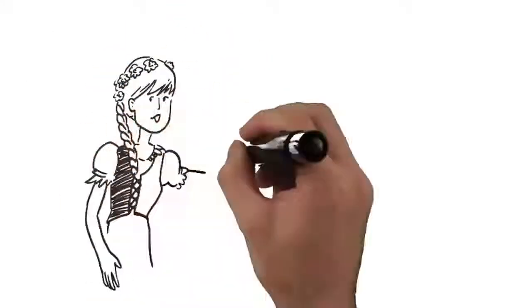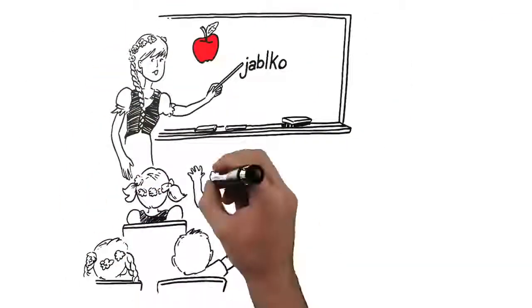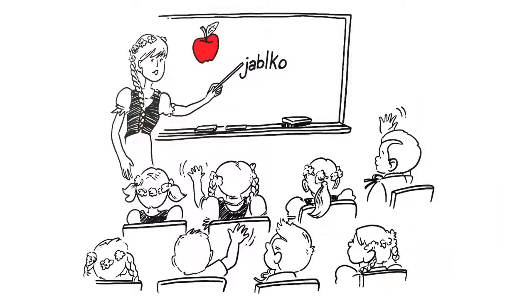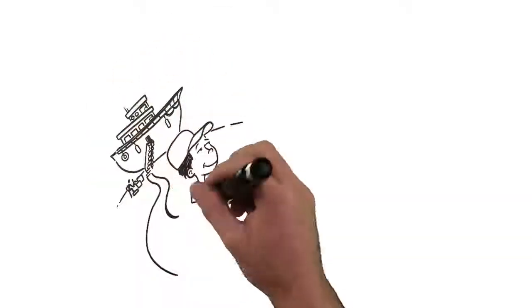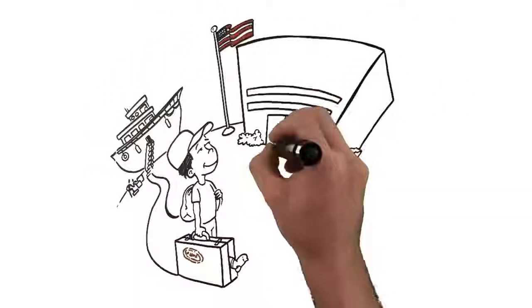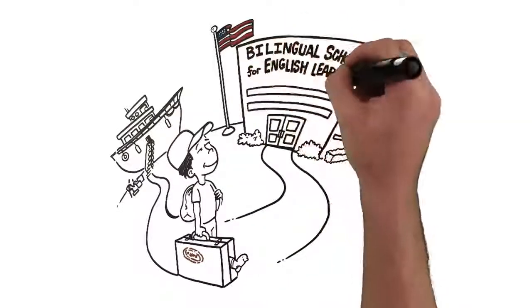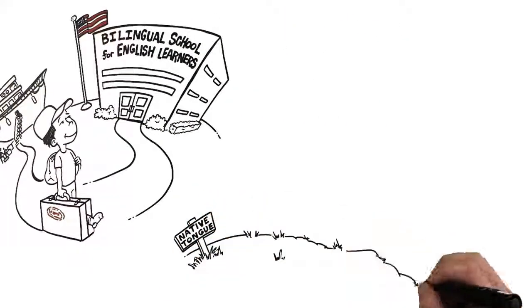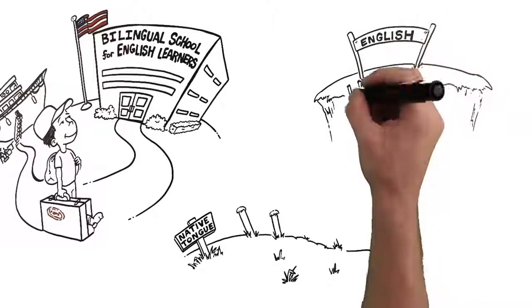The first bilingual schools were actually started in the US by Polish immigrants in the 1600s. Today there are many kinds of language focused schools in the US. There are bilingual schools for kids with limited English skills. These schools teach kids in their native tongue as a bridge to learning English.